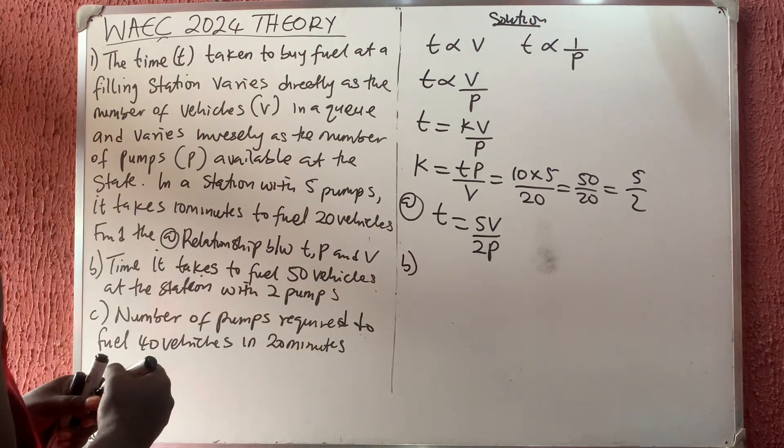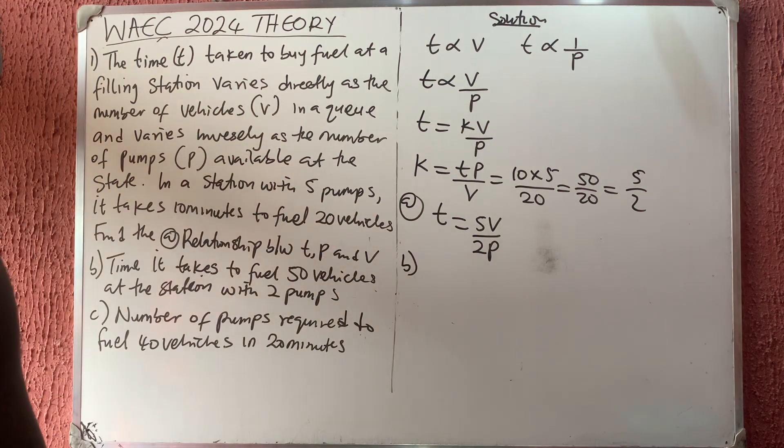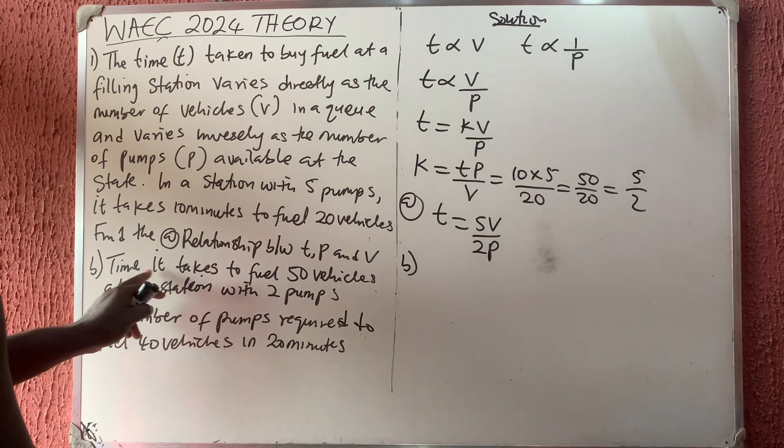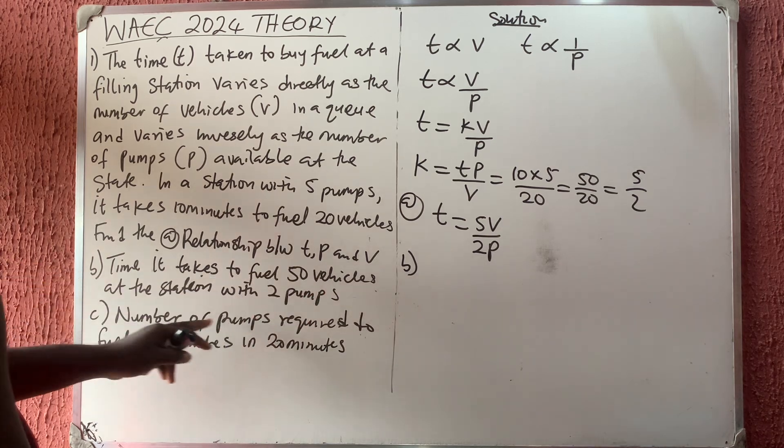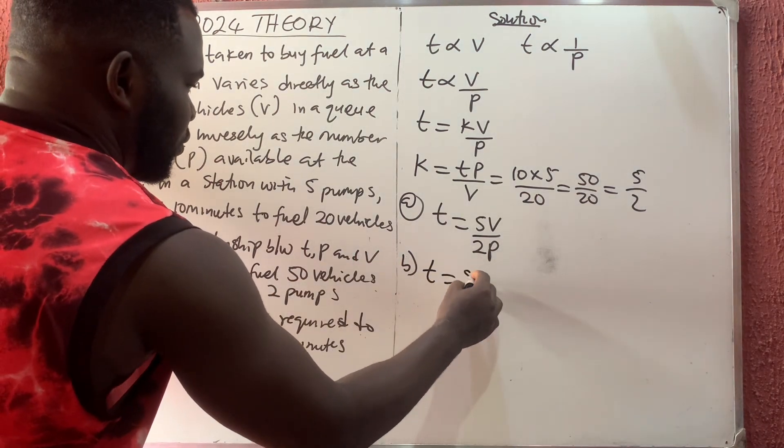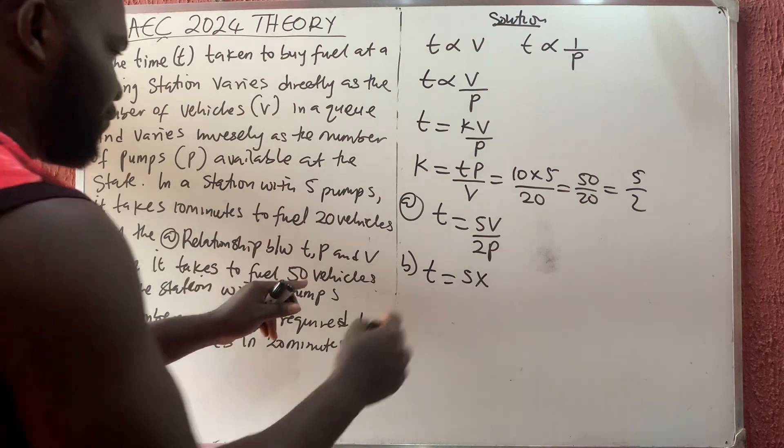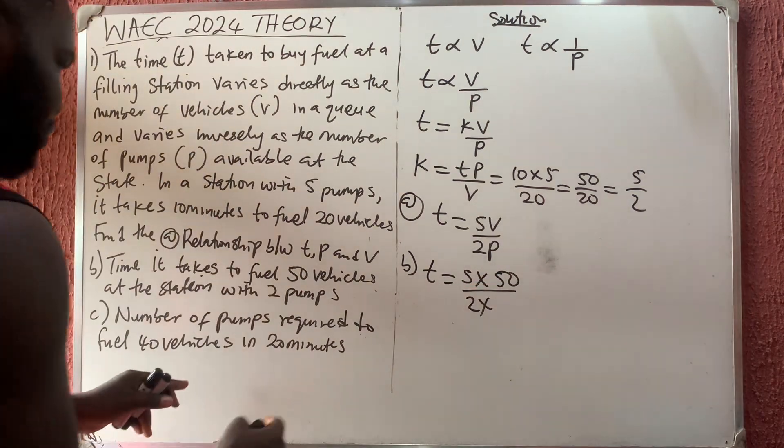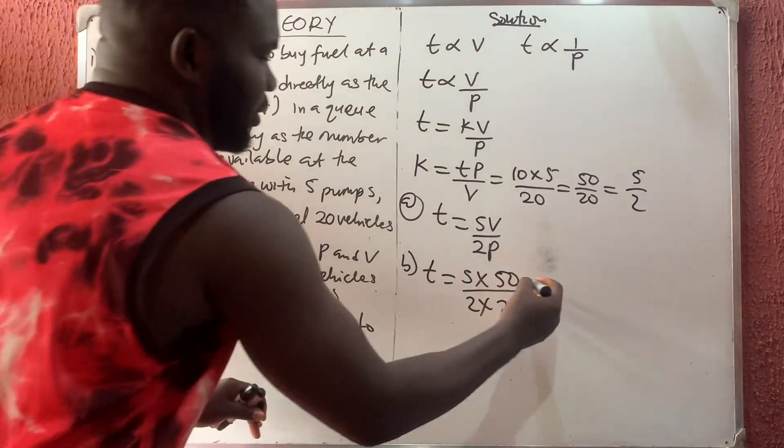For part b, it says we should find the time it takes for 50 vehicles at the station with two pumps. Therefore t equals 5 times the number of vehicles, which is 50, divided by 2 times the number of pumps, which is 2.